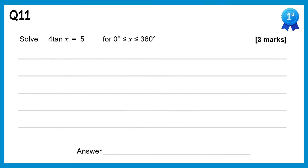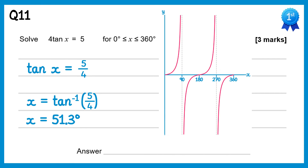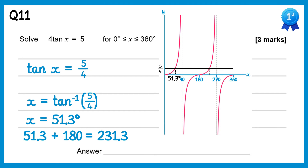For this question we begin by dividing both sides by 4. The left gives tan x and the right gives 5 over 4. Then we do inverse tan of 5 over 4 — using your calculator that's 51.3 degrees. Drawing a line at 5 over 4 on the graph shows two solutions. We already have the left one at 51.3, so we add 180 to get the right one: 51.3 plus 180 is 231.3. So there are two solutions: 51.3 and 231.3.